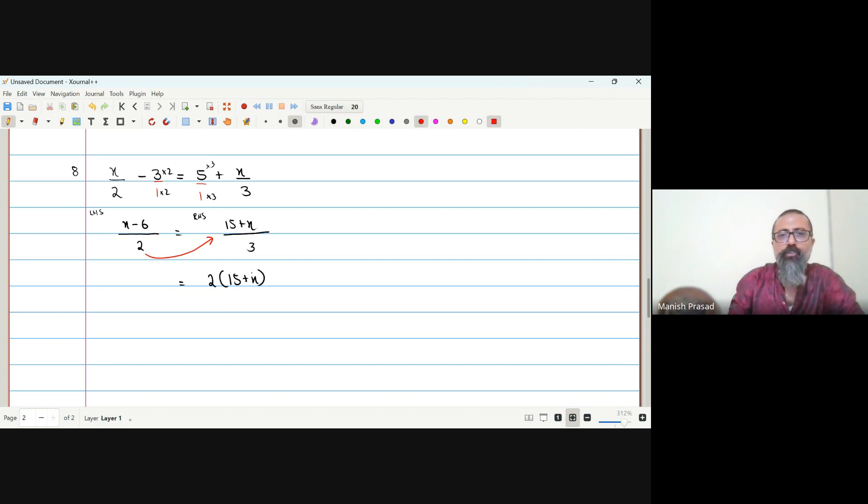Now, 3 is going to go to LHS. So, what is going to happen on the LHS? Multiplication. Now, let's expand it. 3 multiplied by X minus 3 multiplied by 6.